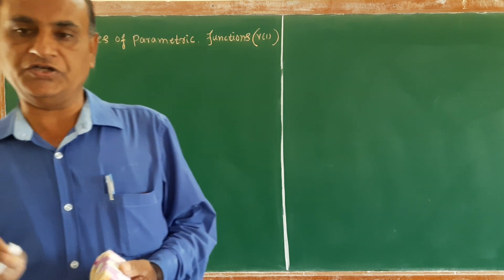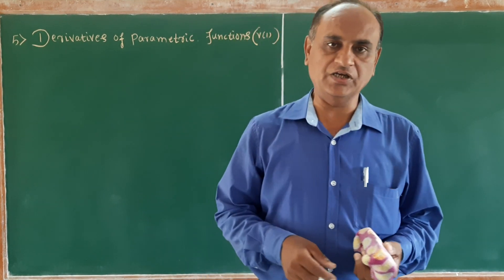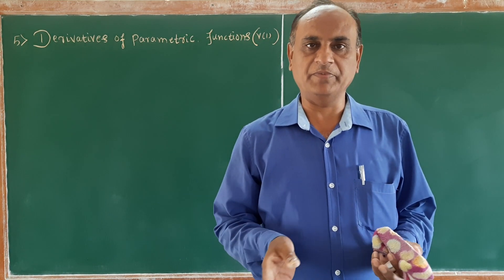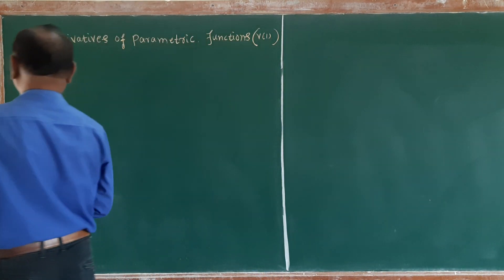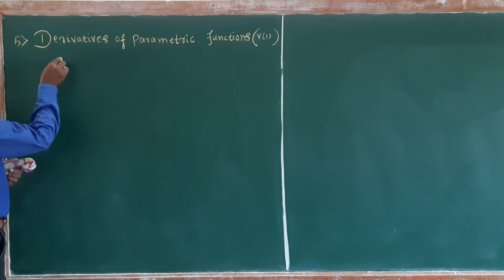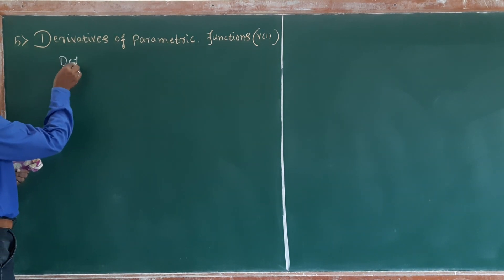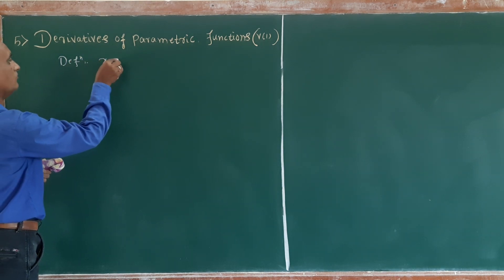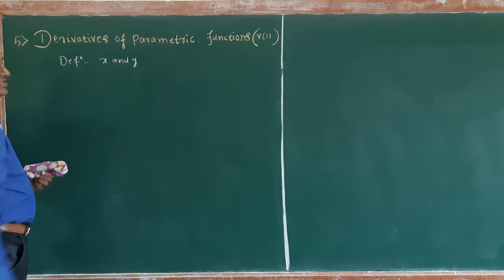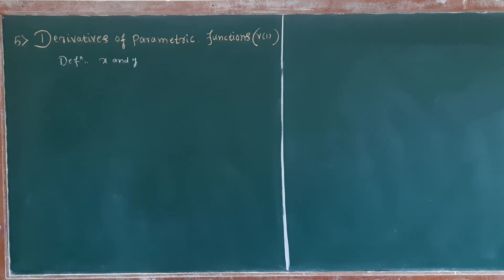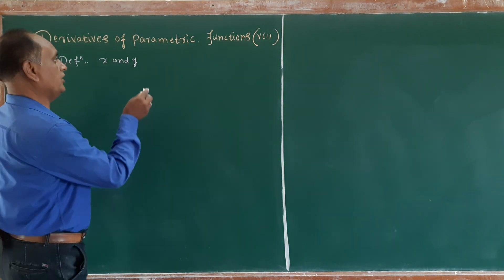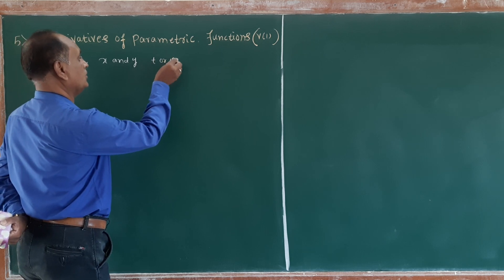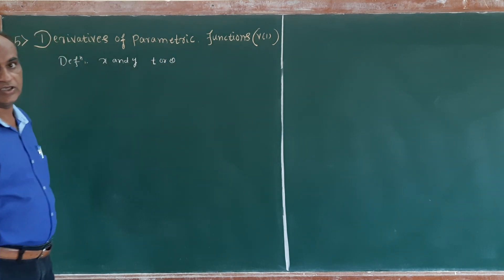First, the definition of a parametric function, then we come to the derivative of a parametric function. Definition: if x and y can be expressed in terms of a third variable — suppose that third variable is t or theta — then t or theta is called the parameter.